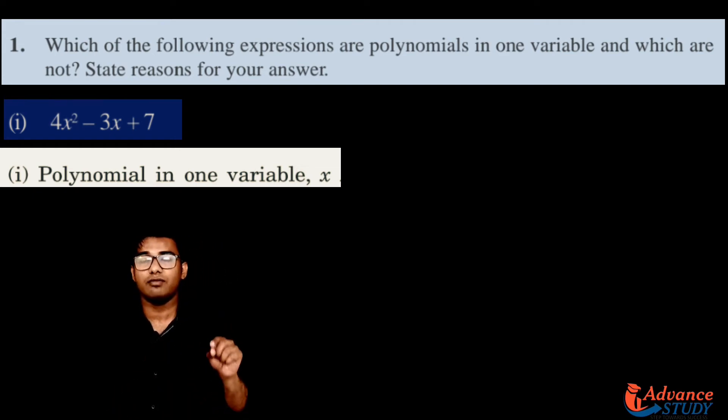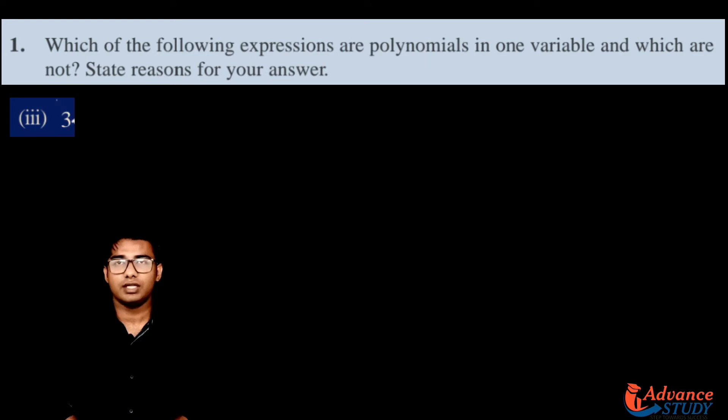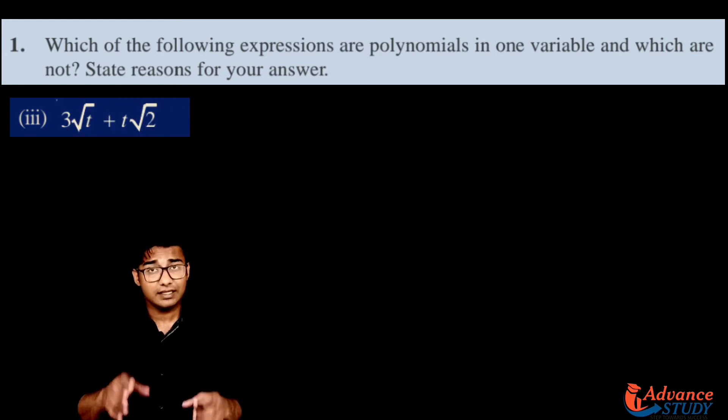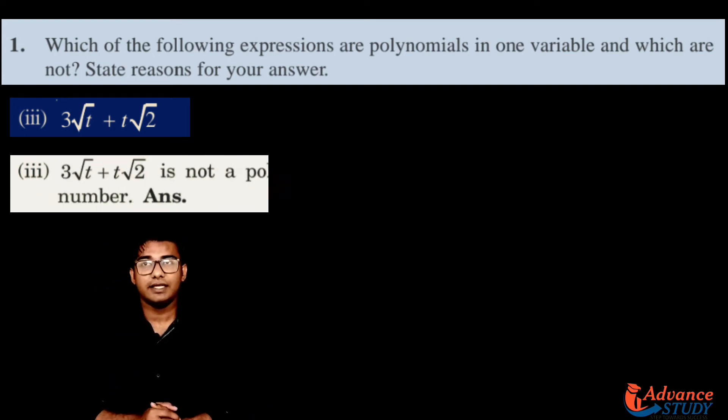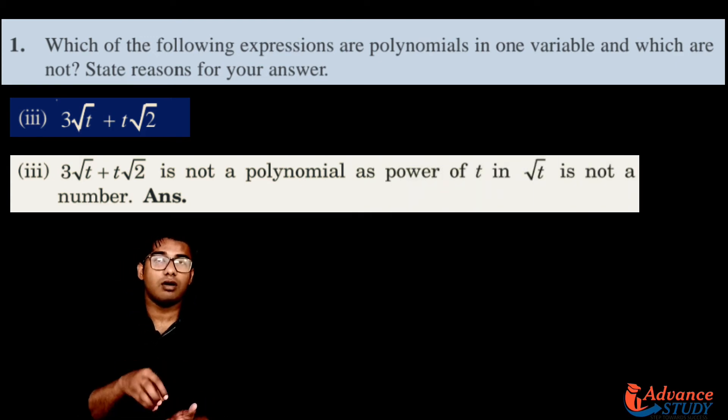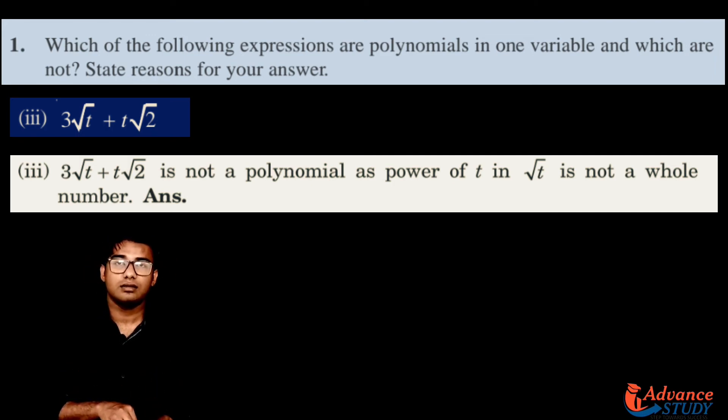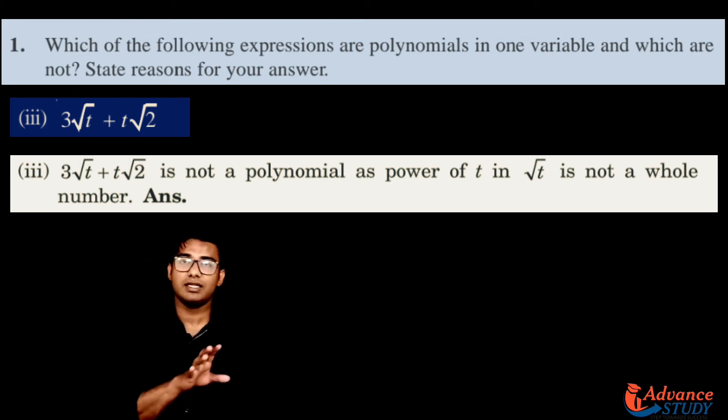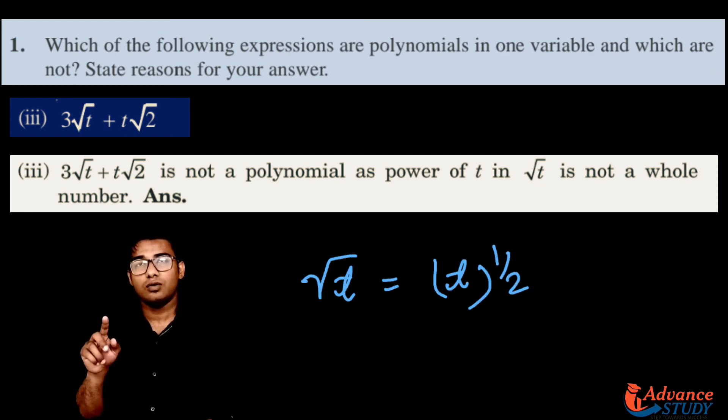Question number 3: 3√t plus t√2. Is this a polynomial in one variable? No, because the power of t is not a whole number. When we have the power of variable as a whole number like 1, 2, 3, 4 up to infinity, then it is a polynomial in one variable. The power of t is in fraction because √t equals t to the power 1/2.